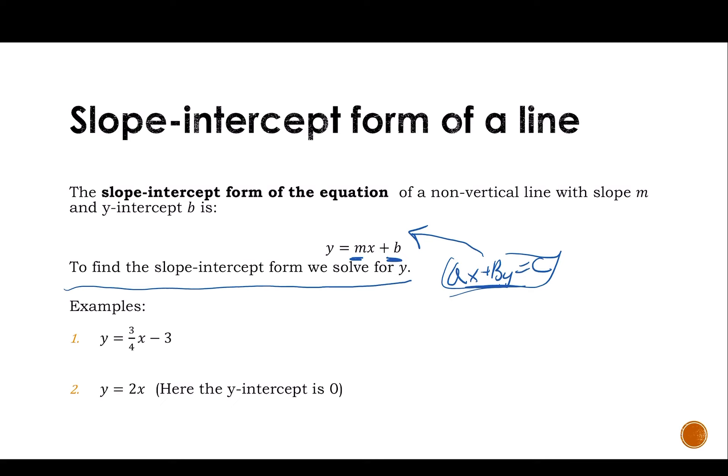This is really, really good. So here are a couple examples. Here I have a slope of 3 fourths and a y-intercept of negative 3. Here I have a slope of 2, and my y-intercept is 0. If we were adding 0, we wouldn't actually write that, so we just let it fall off.